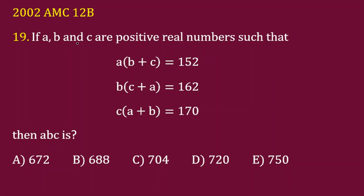If a, b, and c are positive real numbers such that a(b+c) equals 152, b(c+a) equals 162, and c(a+b) equals 170, then ABC is what? The product: 672, 688, 704, 720, and 750.